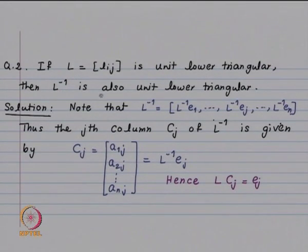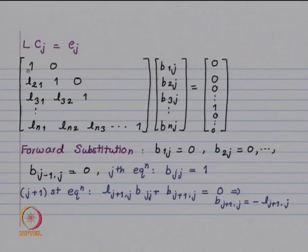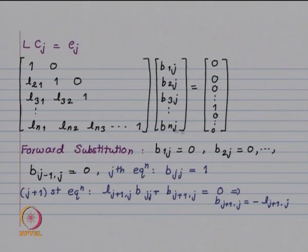Since L is unit lower triangular, its determinant equals 1 (the product of diagonal entries), so it is invertible. We want to show L inverse is also unit lower triangular. Write L inverse as its columns [L^{-1}E1, L^{-1}E2, ..., L^{-1}En]. The j-th column C_j satisfies L*C_j = E_j. Our matrix L has 1s along the diagonal, 0s above the diagonal, and arbitrary entries below. Using the j-th column vector [B_1j, B_2j, ..., B_nj], the right-hand side is E_j (1 at j-th place, 0 elsewhere).